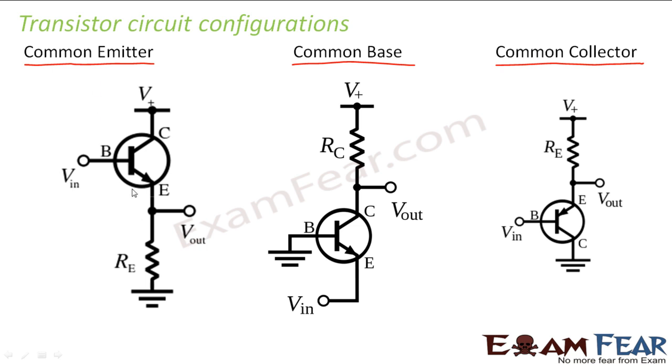So let us look at the common emitter configuration. If you look at it, this is your emitter, this is base and this is collector. So here you see emitter is the one which is grounded. That means emitter is common to this base. So we have written as V input. That means the input is applied between emitter and base and the output can be obtained between collector and emitter.